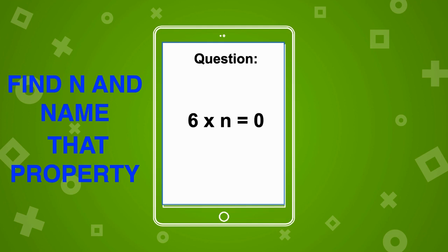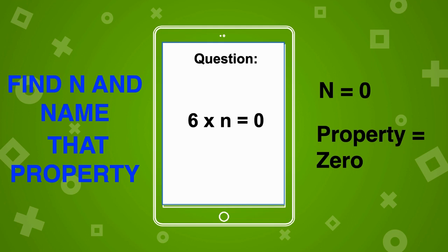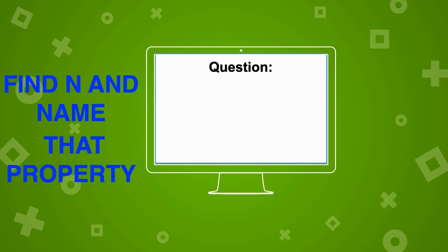6 times n is equal to 0. Think hard! If you said n is equal to 0 and the property is the zero property, you are correct. Let's try this last one: find n and name that property. 45 times n is equal to 45.